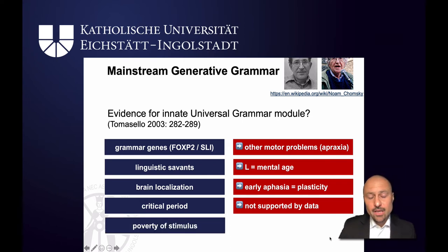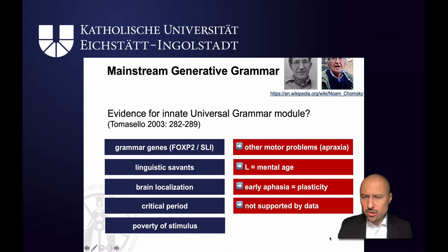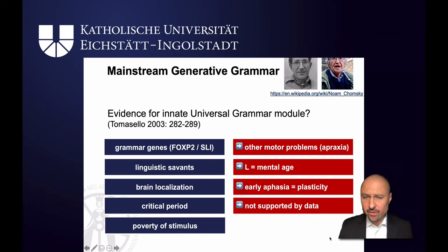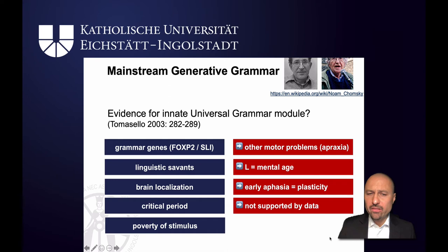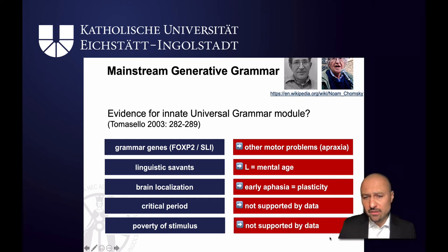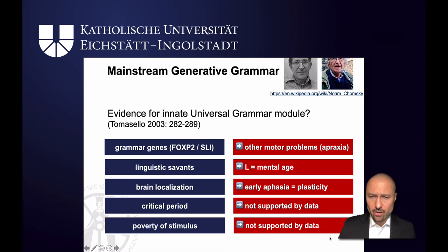And finally there's the idea of the poverty of stimulus. Chomsky argues that kids don't get all the input they need and they don't just repeat what they hear — and that is perfectly correct. But he also argues that some of the structures kids produce are not in their input, which would mean they must come from their genetic setup as part of universal grammar. But as we will see, the poverty of stimulus argument is not as convincing as many people thought for a long time.